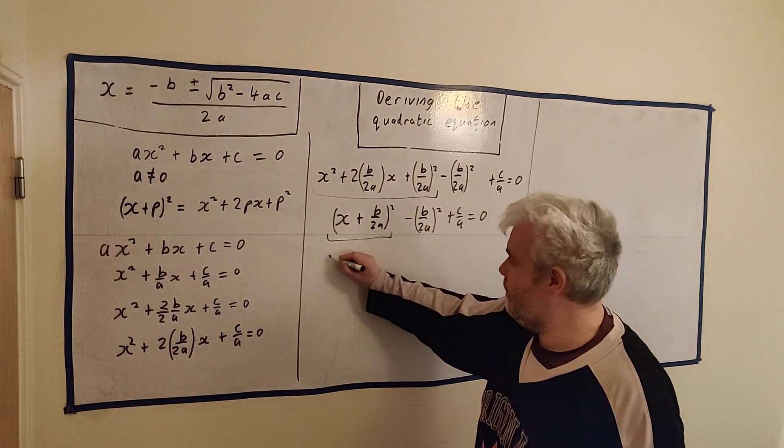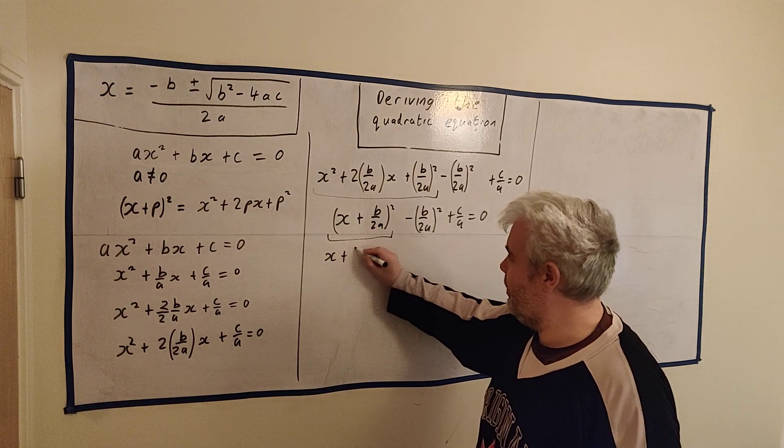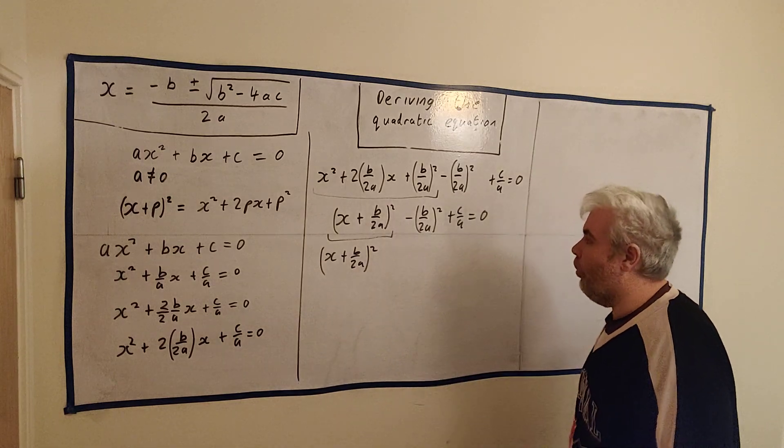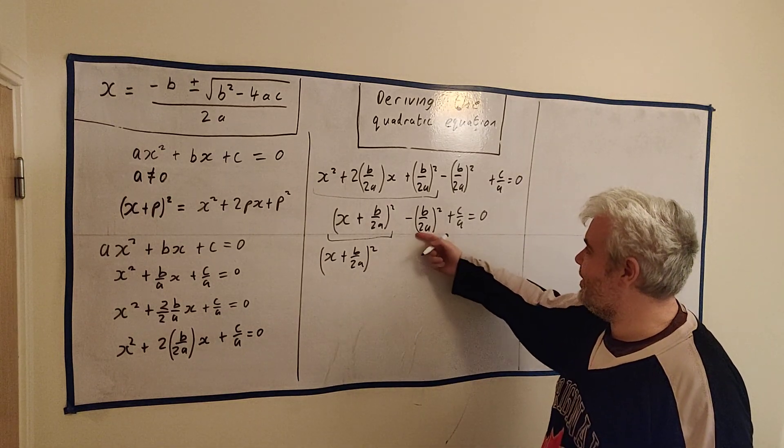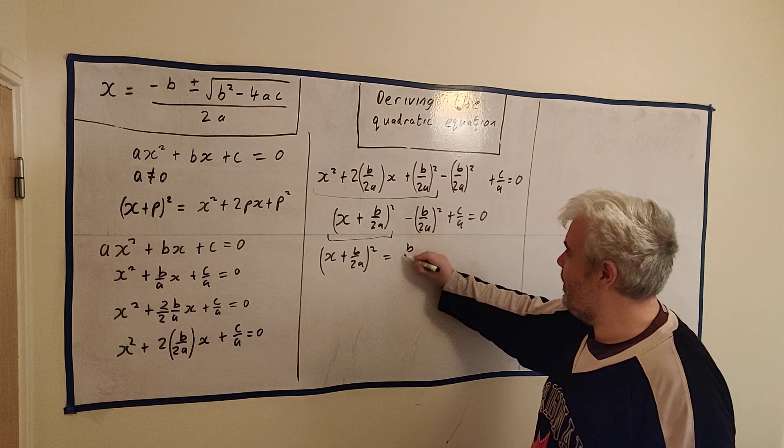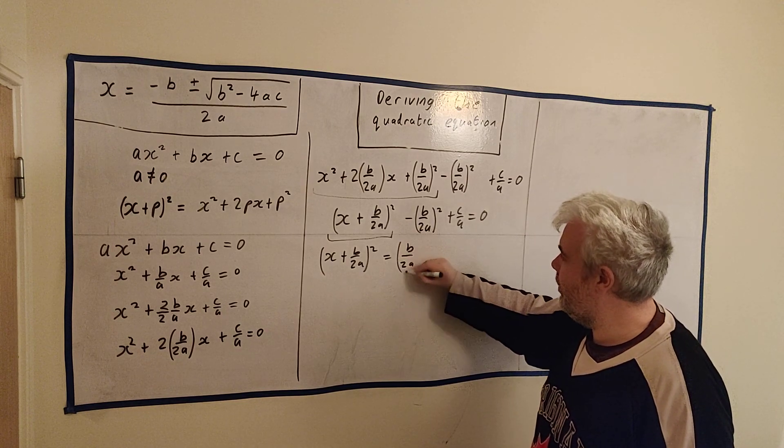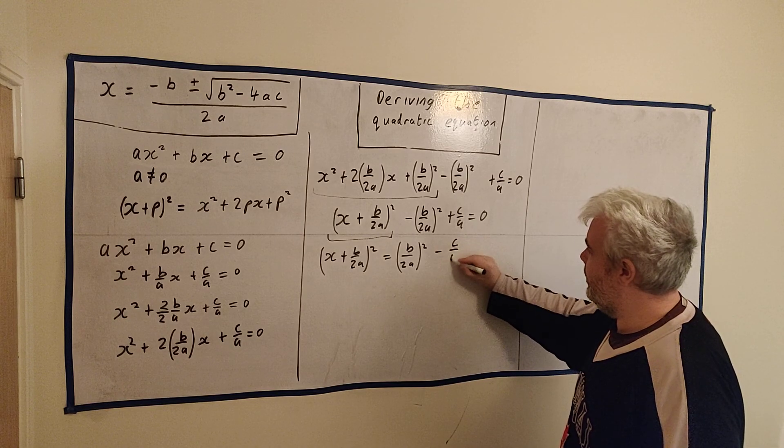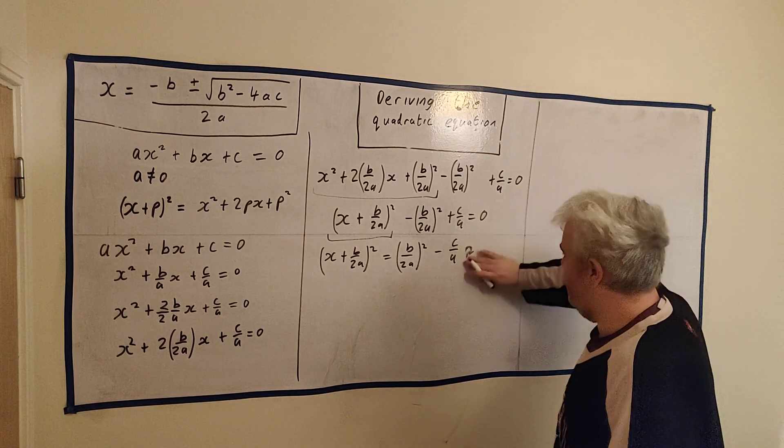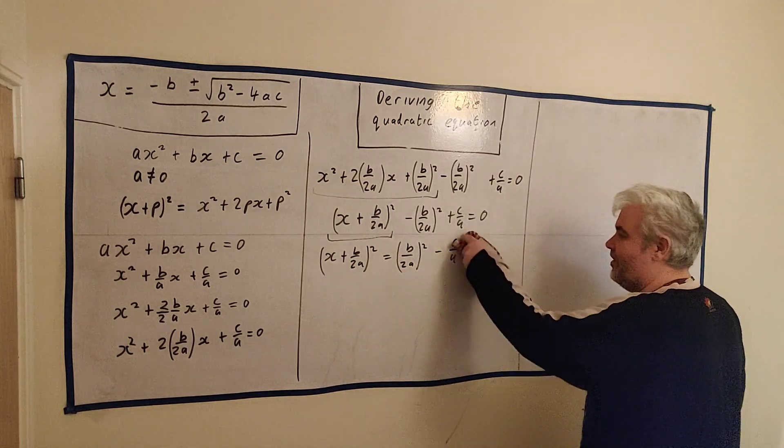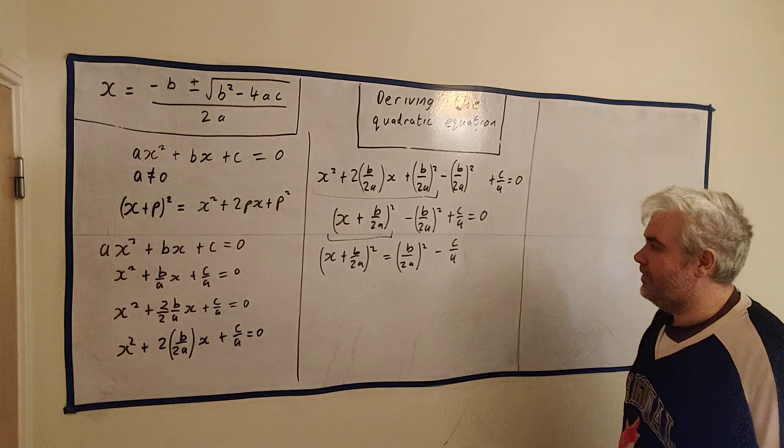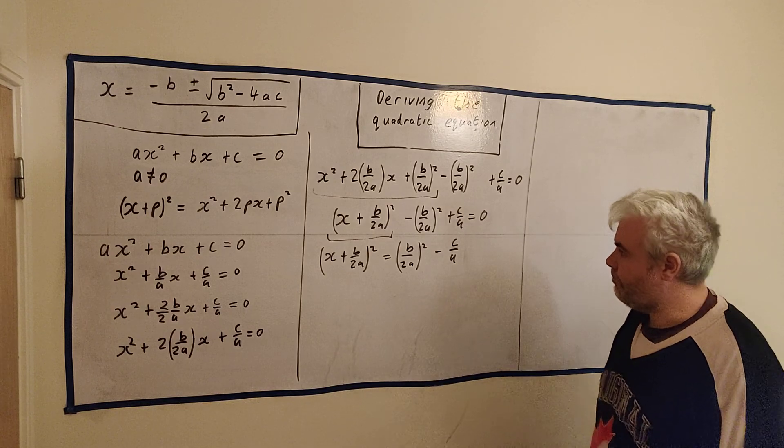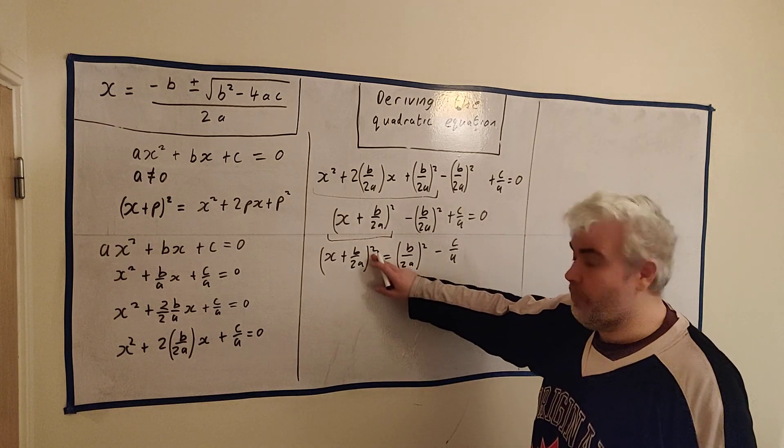Alright, let's change a few more things. x plus b over 2a all squared. Let's add this to both sides. Equals b over 2a squared. Let's take this from both sides. Minus c over a. I just added this to both sides. Took that away from both sides. What else I need to get rid of? I need to get rid of the squared.